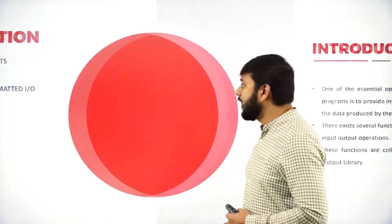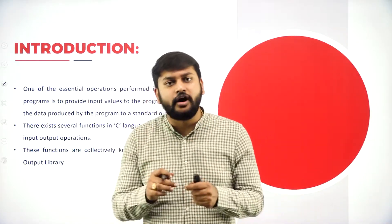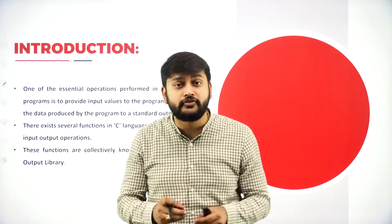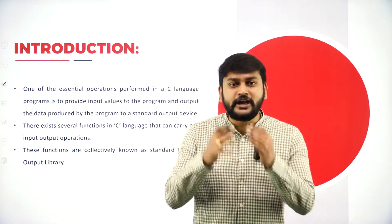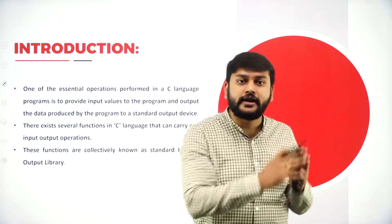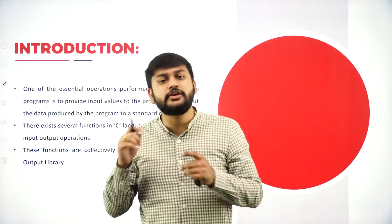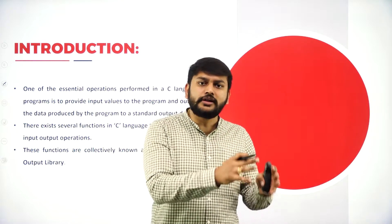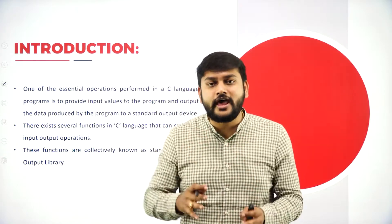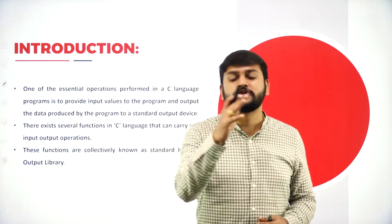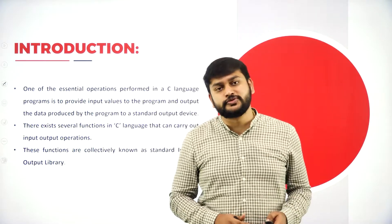Introduction. If I want to read input in C programming or if I want to give output, I have to use some predefined functions. Predefined functions — I have already defined them, so I will just be using them. From where exactly are you getting those functions? I have stored them in a place called the standard library. That is where you will get all the predefined functions with respect to input and output operations.